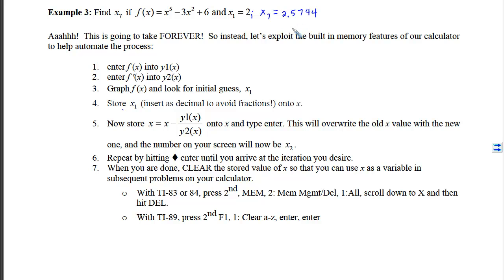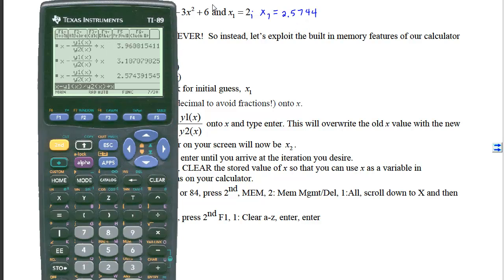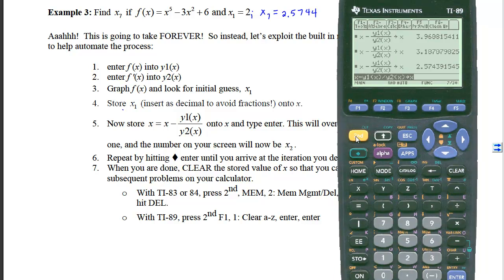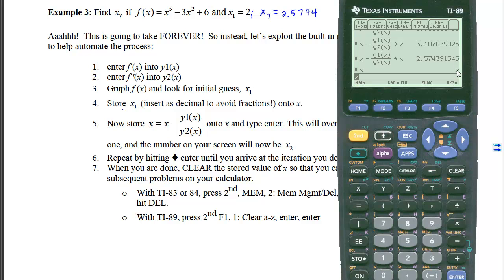So to do that on a TI-89, we are going to press 2nd, F1, and that takes us into the cleanup menu, and we can clear our A to Z. You can double check that it has been cleared by typing x and seeing that it gives you an x back instead of a number.